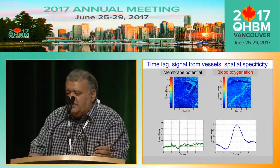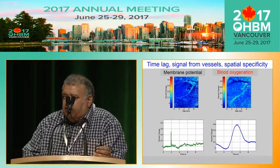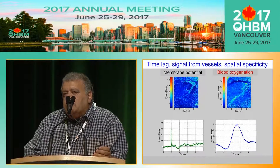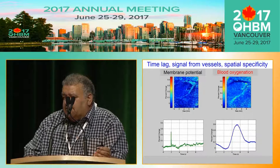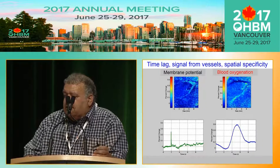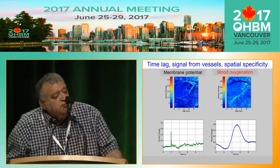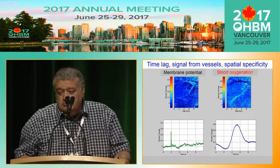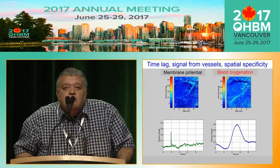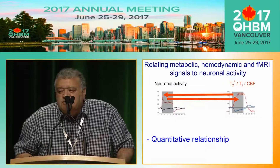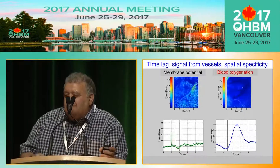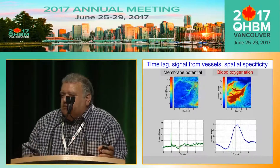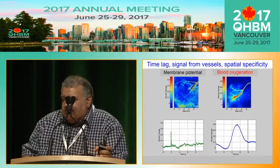On the left, we have imaging of membrane potential with voltage-sensitive dyes; at the bottom is the time course. This is four-paw stimulation — electrical stimulation to the four-paw of the rat. On the right, we see from the same region the blood oxygenation signal and its time course. There was a flash — that was the response to four-paw stimulation. It's gone quickly; now the hemodynamic response develops, mainly in arteries.